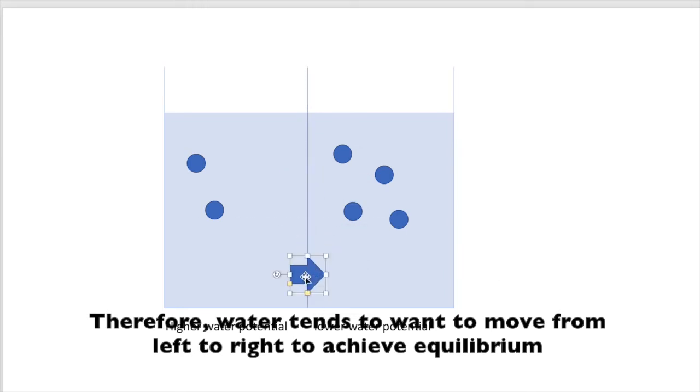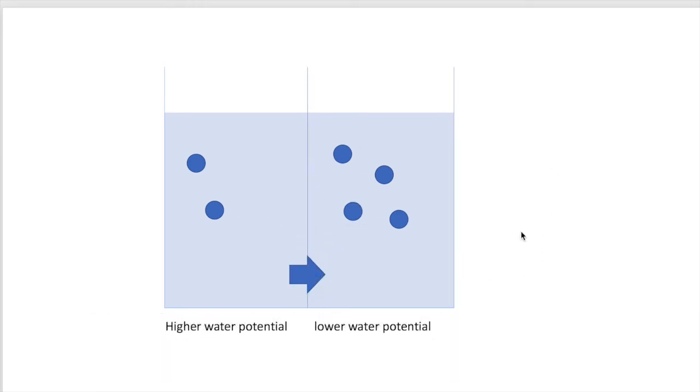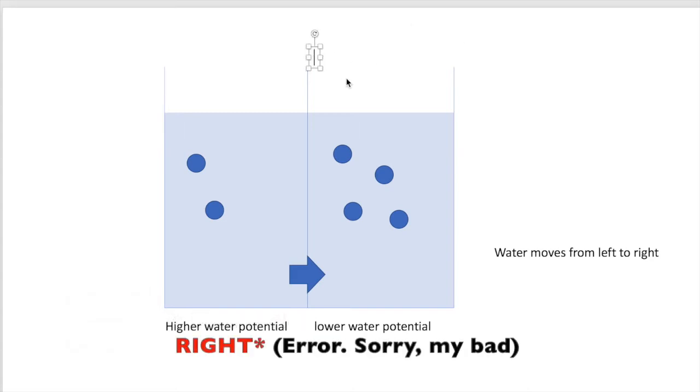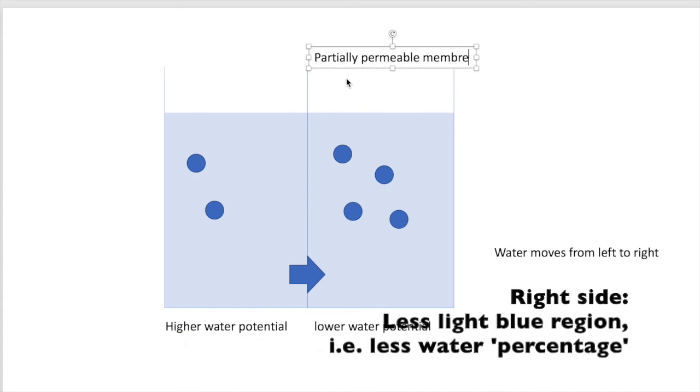When I'm talking about more dilute solutions, it will have higher water potential than something that is concentrated because the ratio of a dilute solution has more water, more percentage of water inside. So you can see in this example, on the left side, there is a higher amount of water ratio as compared to the one on the right, and if osmosis was to happen in this container, it will move from the left to the right.